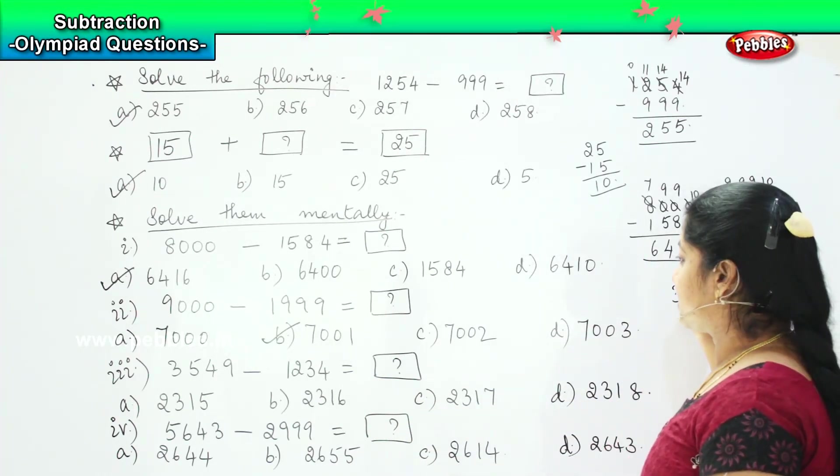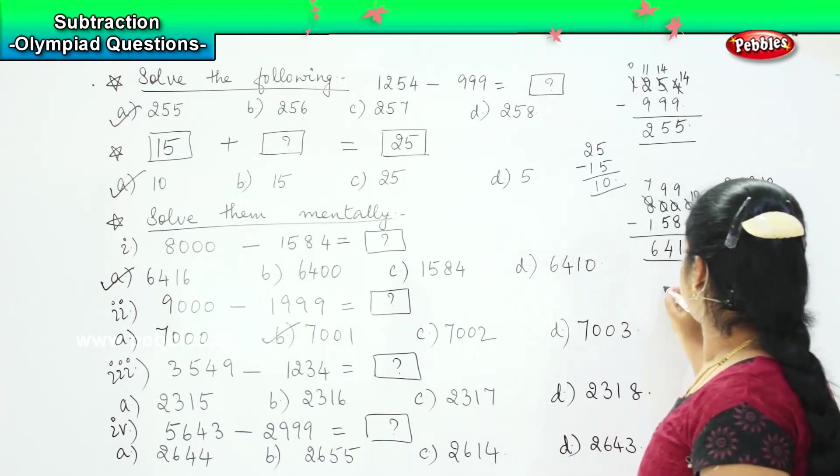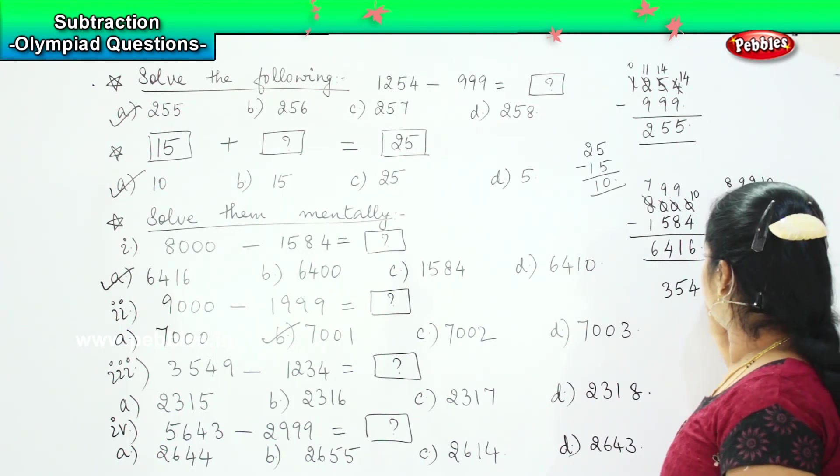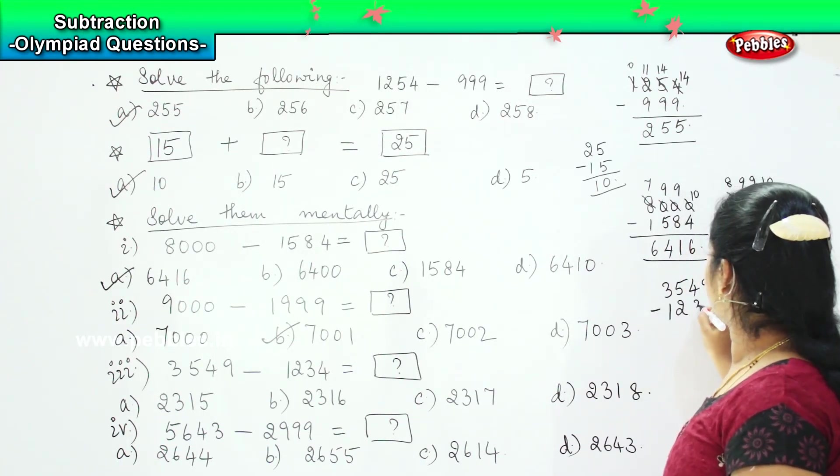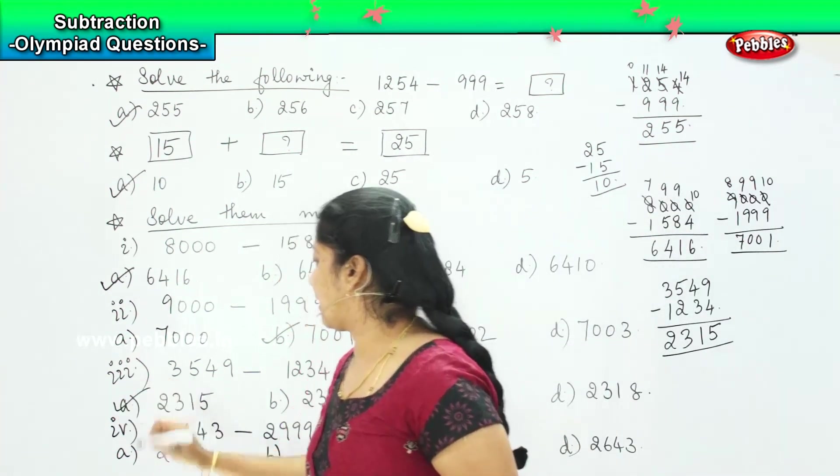Shall we move to the next question? So the next question says 3549 minus 1234. So this is an example of without regrouping because the above number is greater than the below number, right? So 9 minus 4 is 5. 4 minus 3 is 1. 5 minus 2 is 3. And 3 minus 1 is 2. My answer is 2315. Where can you find it? Yes. That is option A again.